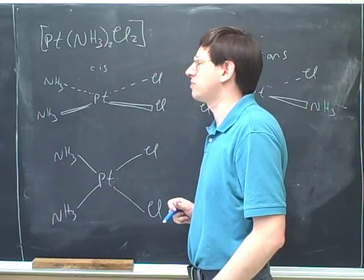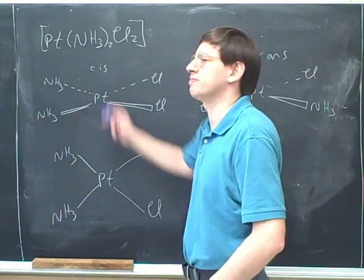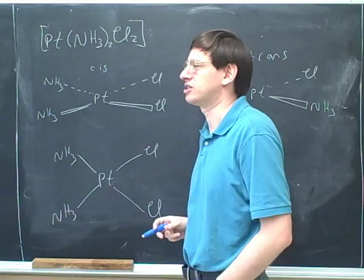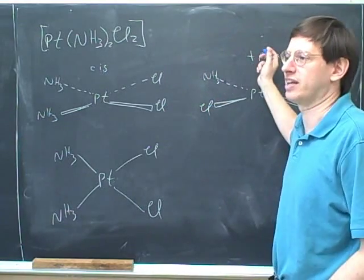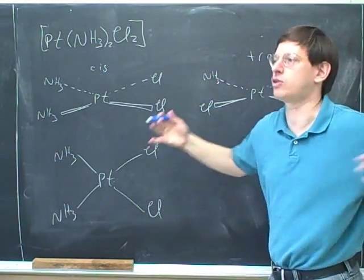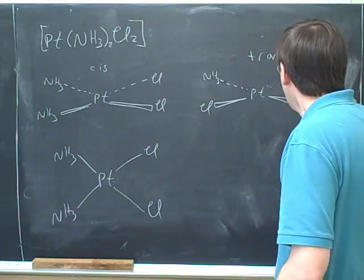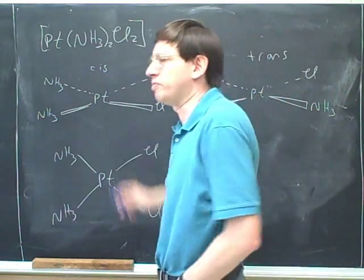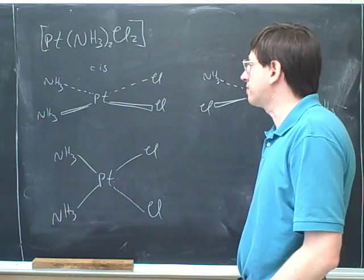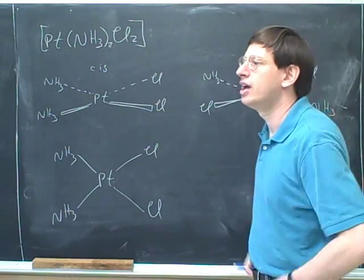The two ammonias are on opposite sides and the two chlorines are also trans. Whereas this compound would be called cis. Cis is an old, I think, Latin or Greek term, Latin I think, for same side. Although that is not used very much nowadays. But we still sometimes use trans, like in the term transatlantic, for things that are across from each other. So this would be called trans and this would be called cis. And these are two different molecules. What's the relation between them? They're isomers.